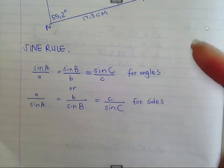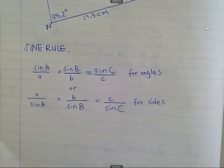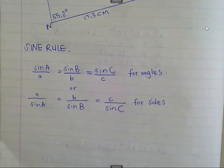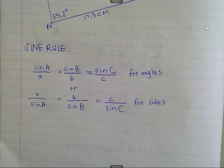You will notice that the two forms of the sine rule I've written down are basically exactly the same. The only difference is that when you're calculating an angle, the calculation is much easier if you put the angle at the top, and if you're calculating a side, it's easier if you put the side at the top.